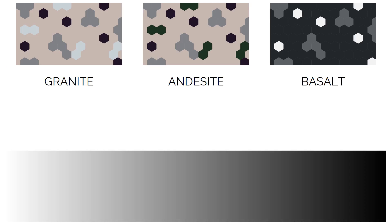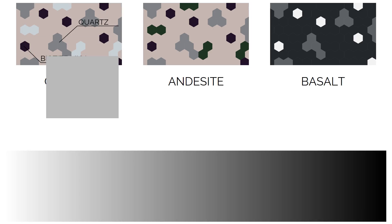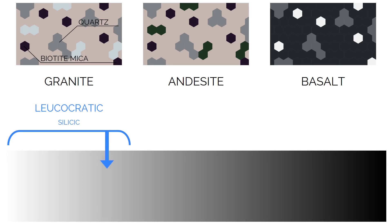Mostly formed at convergent plate boundaries, silicic rocks will contain minerals with lots of silicon dioxide, such as quartz and the micas. They will be between 66 and 75% silica. Granite is a silicic rock, and is normally found deep in the crust due to the high viscosity of silicic magmas — a similar consistency to toothpaste. Being a silicic rock, granite has a leukocratic aspect.